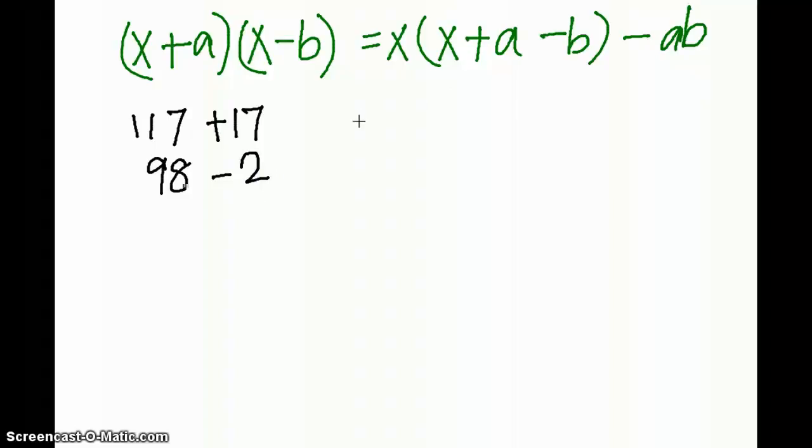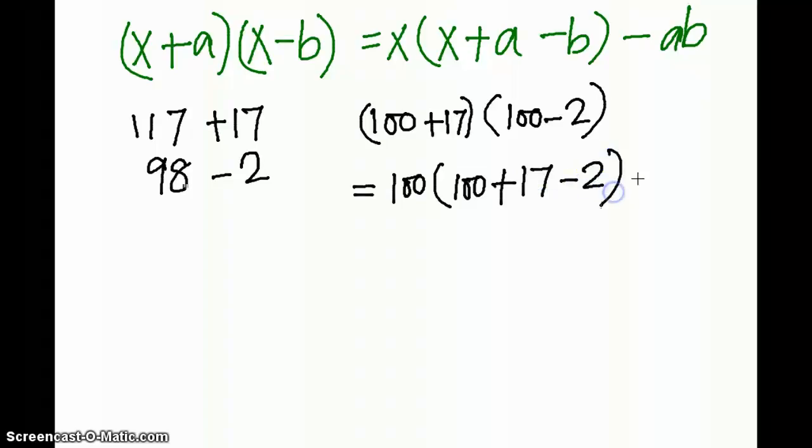Let's check out how the formula works. We can write 117 as 100 plus 17, into 98 as 100 minus 2. The solution becomes 100, which is our x, whole into x plus a, that is 100 plus a, where a is 17 and b is 2, minus b, minus a into b.